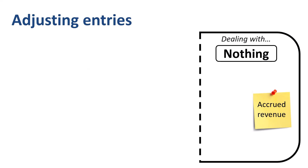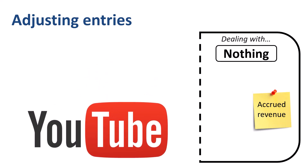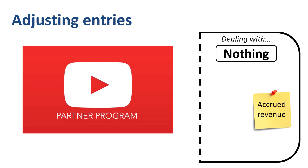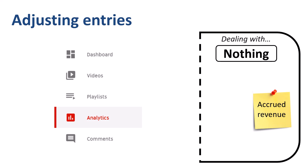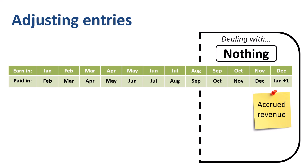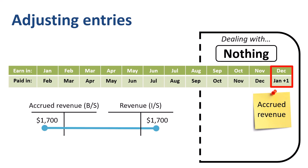A related review happens on the revenue side. Has any revenue been earned for which the company was not paid yet and for which the company has not sent an invoice? The company runs a YouTube channel. If you are part of the YouTube Partner Program, YouTube pays you monthly for your share of the advertising revenue within a few weeks after the end of the month — so in January you receive payment for your December revenue. We want to capture that revenue in the current year, as we don't want to understate revenue. Debit accrued revenue on the balance sheet for $1,700, credit revenue in the income statement for $1,700.